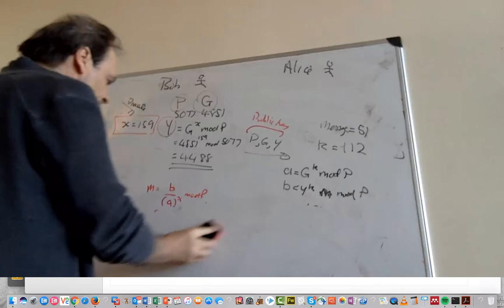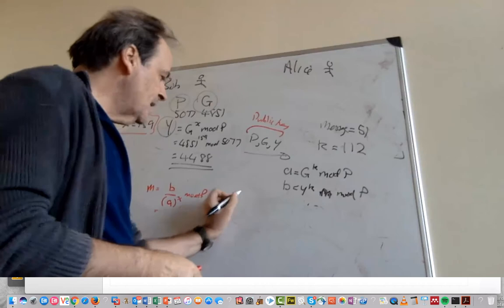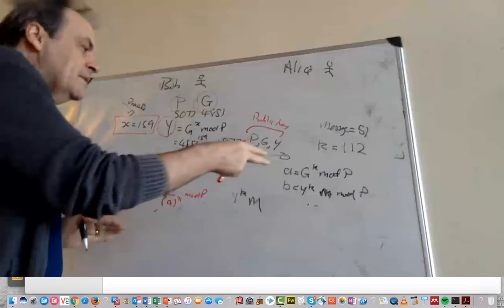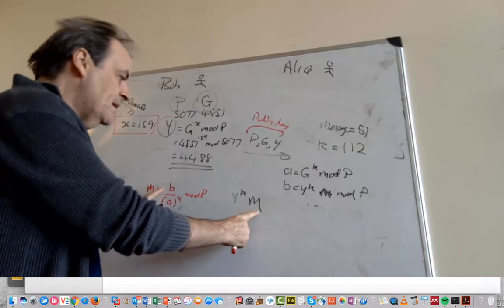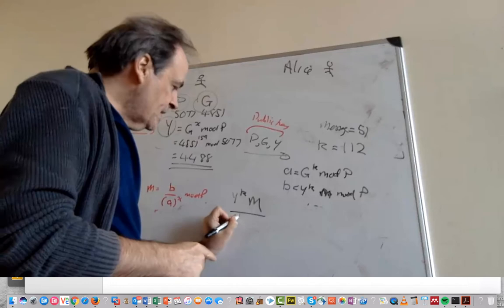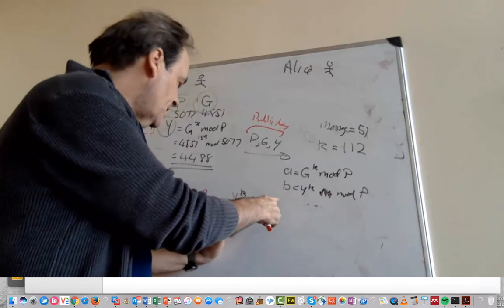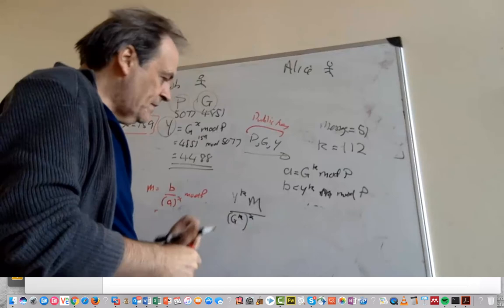So the value of B was Y to the power of K M. We'll forget about the mod P part from there. Y to the power of K M is our B value, and our A value is G to the power of K, G to the power of K to the power of X.